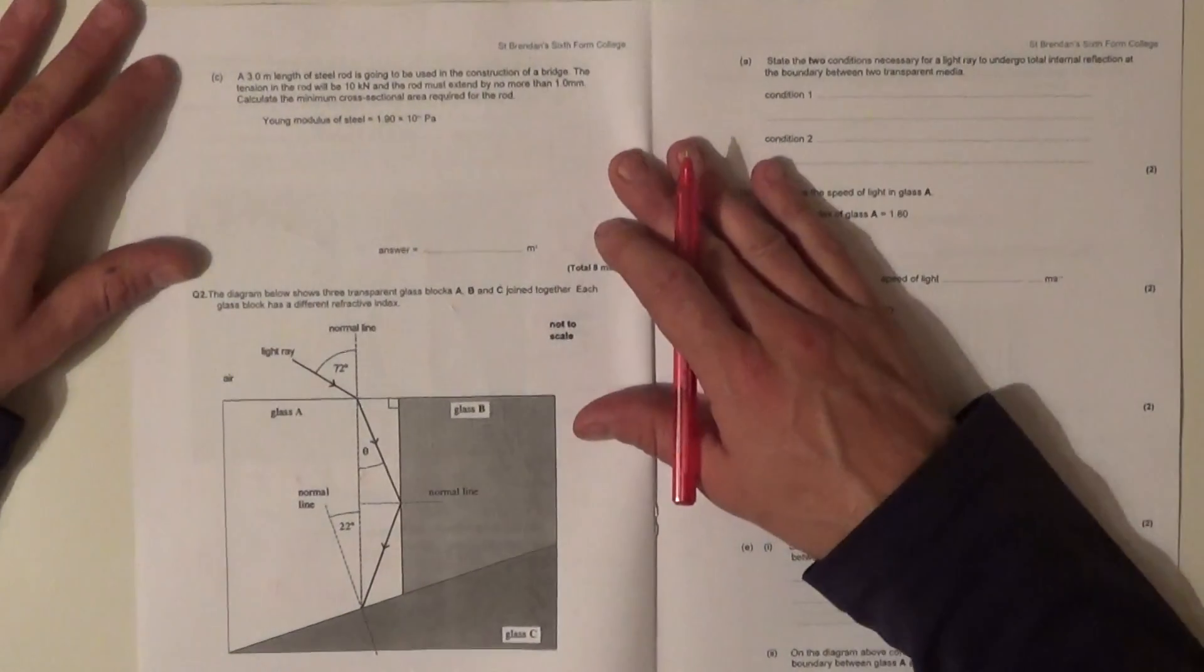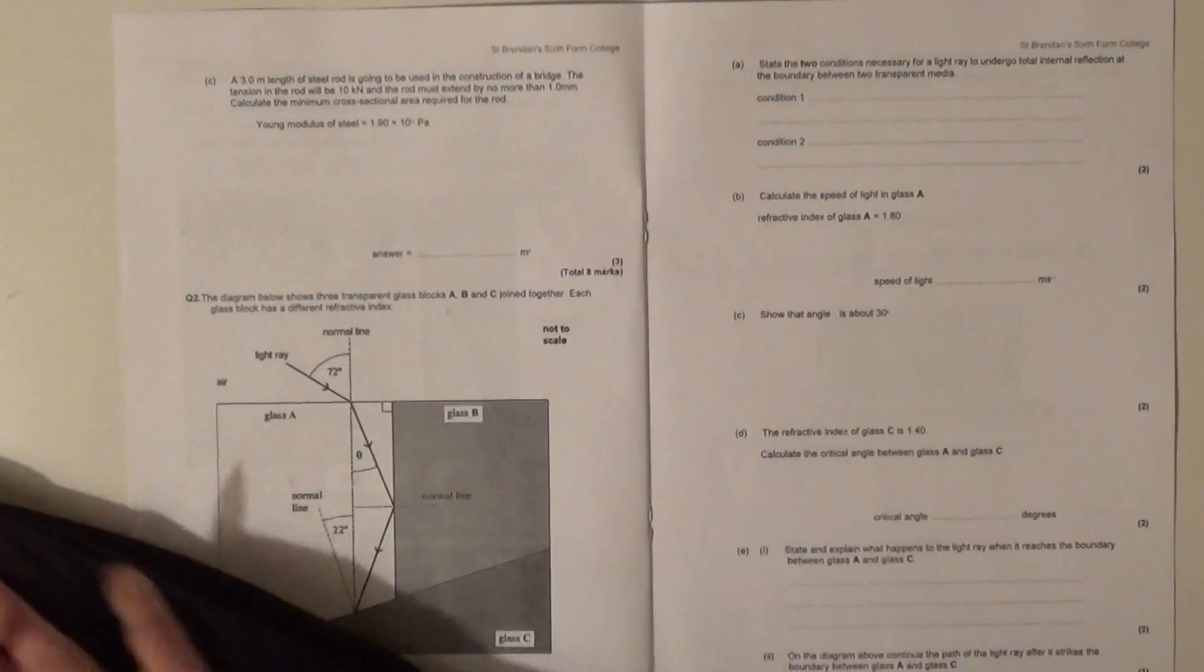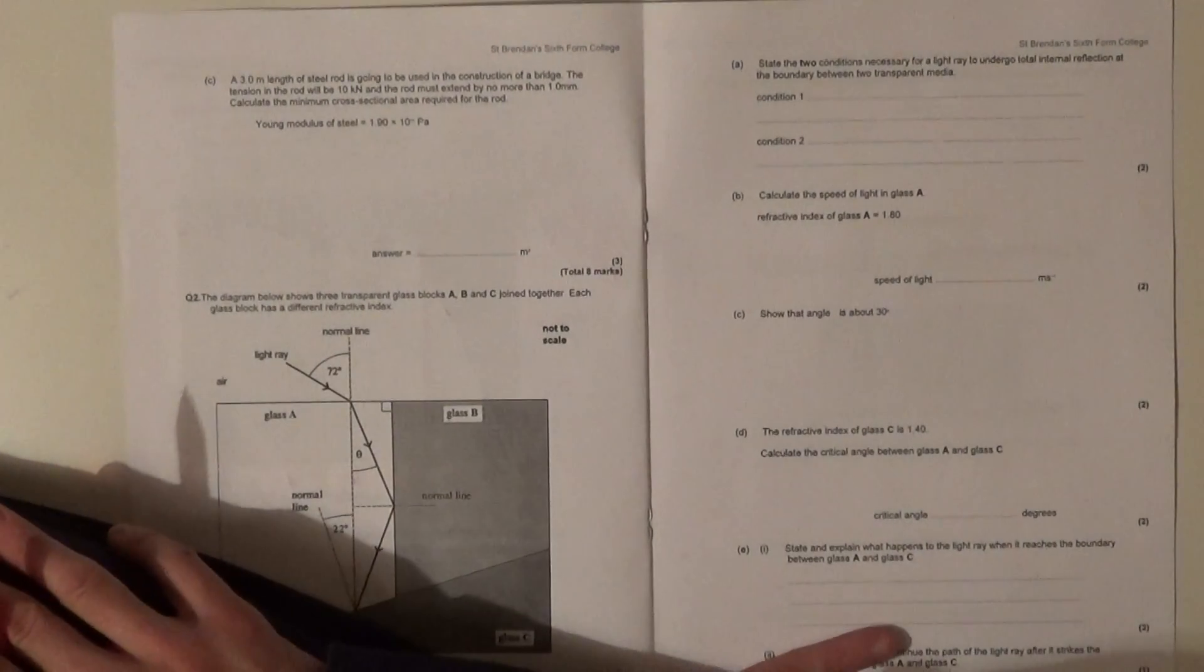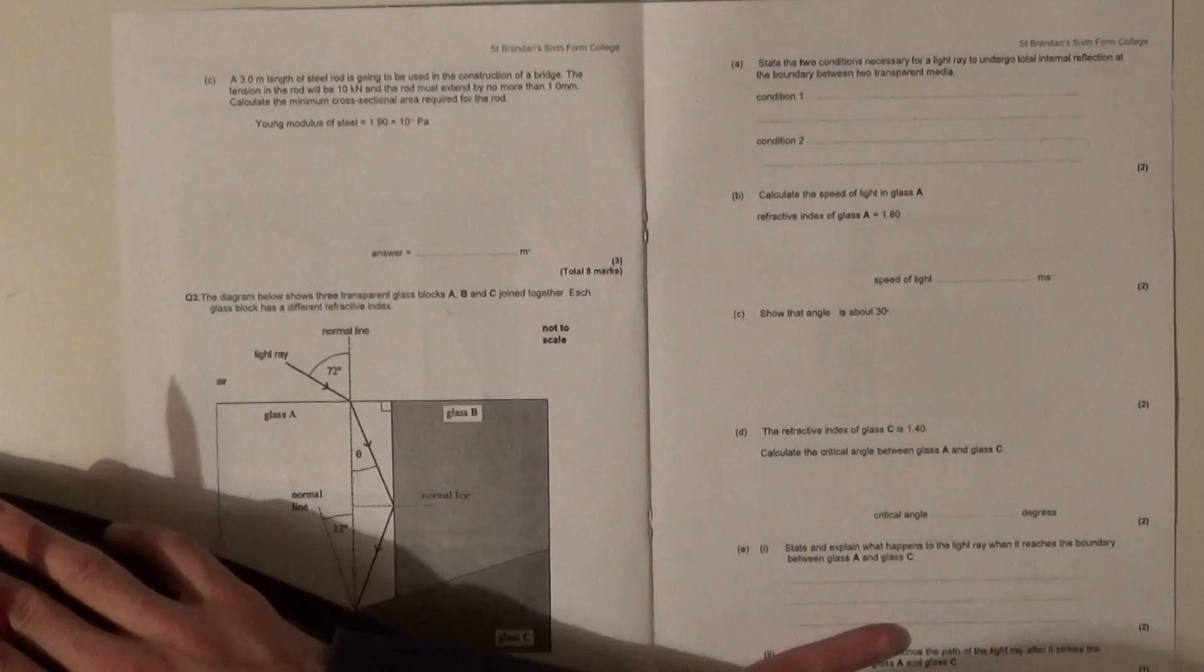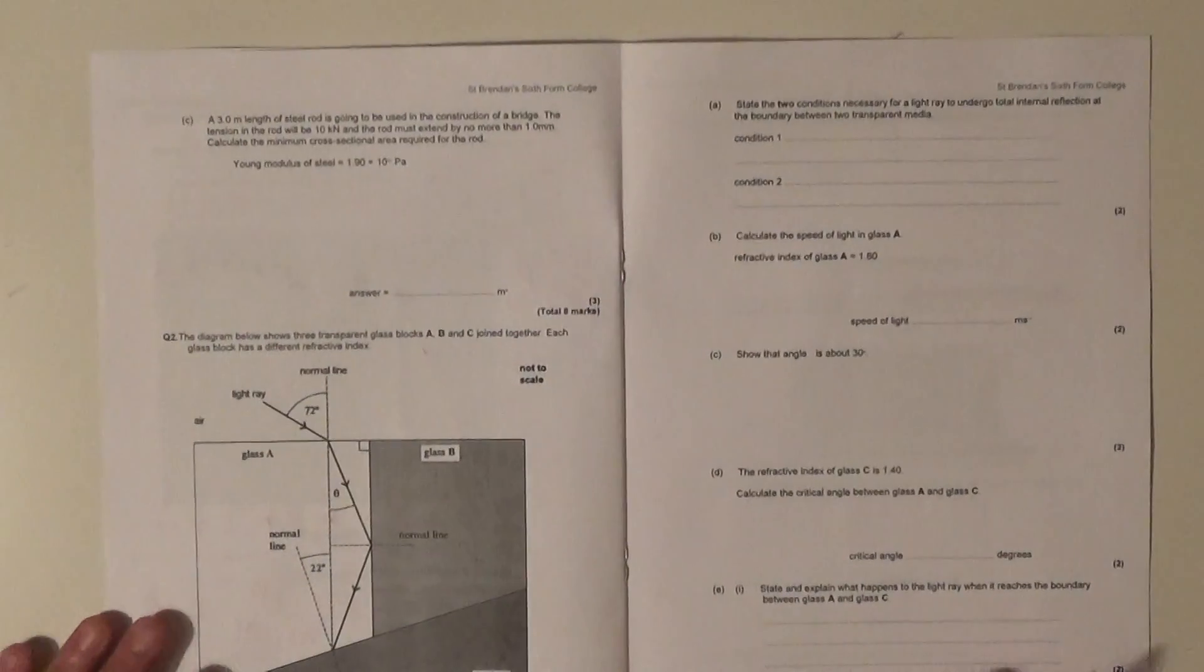Next up: steel rod is going to be used in the construction of the bridge. The tension of the rod will be 10 kilonewtons and the rod must extend by no more than one millimeter. Calculate the minimum cross-sectional area required for the rod.